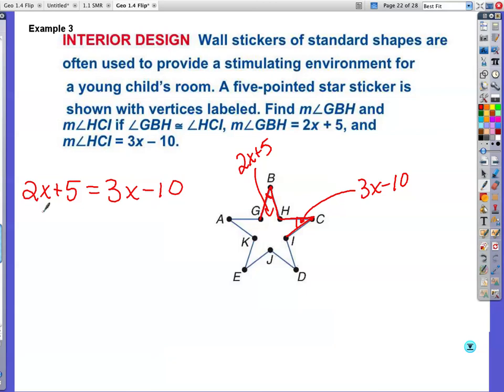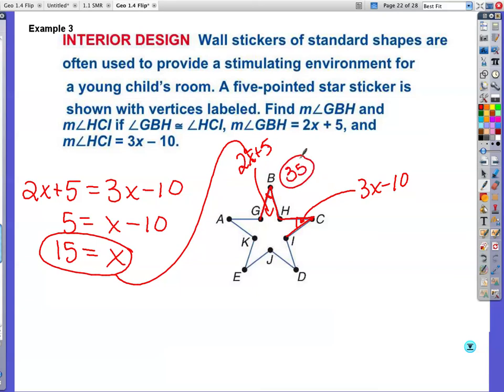I'm going to put my X's together. I'm going to subtract 2X from both sides. Now I'm going to add 10 to both sides. And I get X is equal to 15. The question is, find the measures of the angles. This is only telling me what X is. So now if I put 15 in here, 15 times 2 is 30. 30 plus 5 is 35. Double check over here. If I put 15 in here, I'm going to get 45. 45 minus 10 is also 35, which would make sense because the angles need to be congruent.